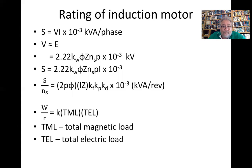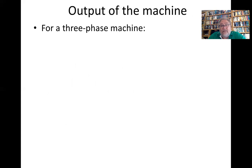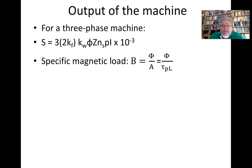Let's look at the output of the machine for a three-phase machine. S is equal to 3 × 2 k_f k_w φ Z n_s × I × 10^-3.